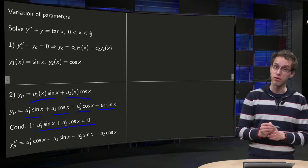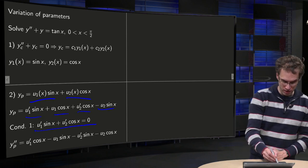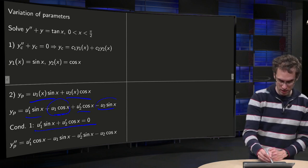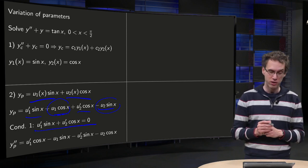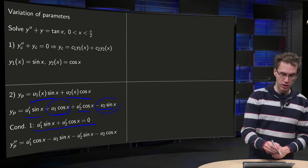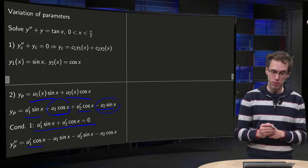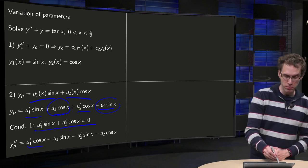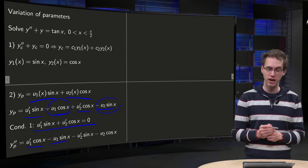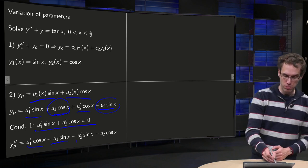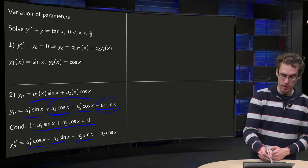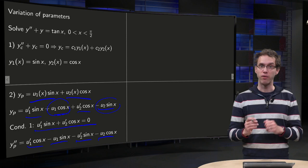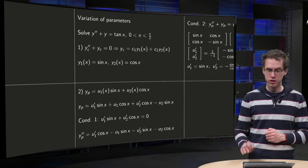Which means that for our yₚ', we are left with this term and that term. So if you compute yₚ'', we get u₁'cos(x) and with the product rule, derivative of cos equals -sin, so -u₁sin(x), -u₂'sin(x), and -u₂cos(x).